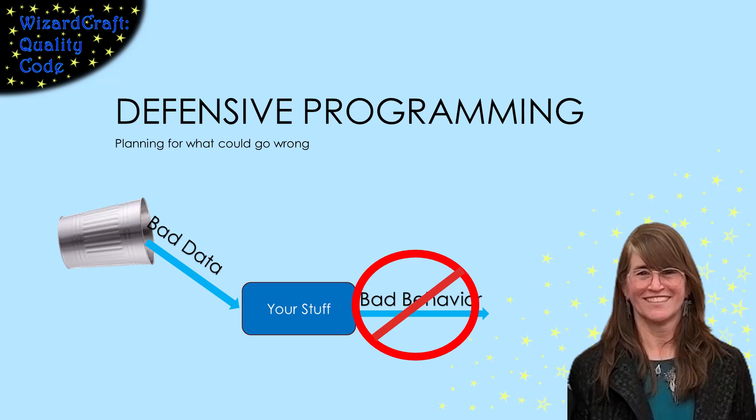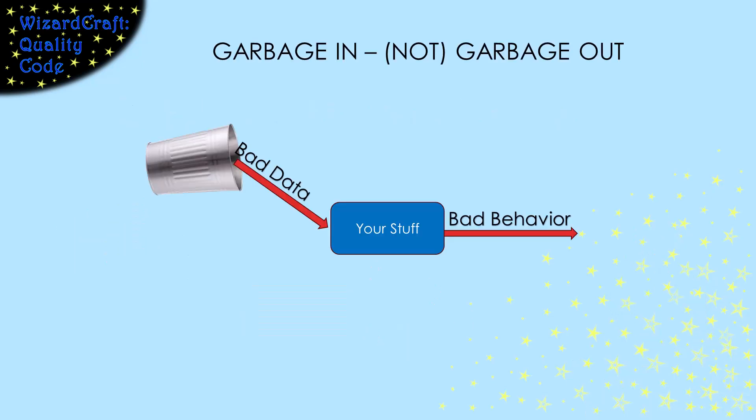Defensive programming means designing your code to be robust to misuse. We want our systems to be able to handle bad data from users and from other systems. Sometimes people say, garbage in, garbage out, meaning that if you put bad data into the system, it's allowed to misbehave, give garbage back, crash, go nuts, anything. Well-designed systems do not do that. Give the machine bad data, and it should handle it gracefully.